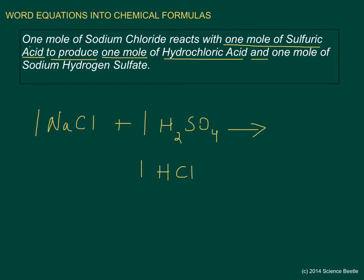'And' is the next portion, so we'll put a plus sign and one mole. The coefficient is one, and then we have sodium hydrogen sulfate. Sodium has a symbol of Na, hydrogen is H, and sulfate is represented by the polyatomic ion SO₄.